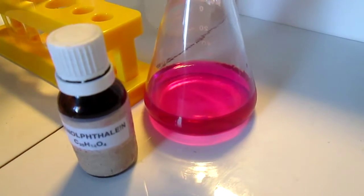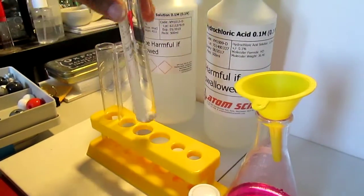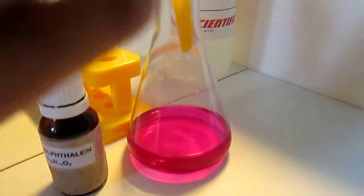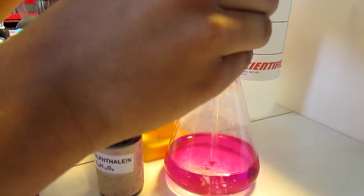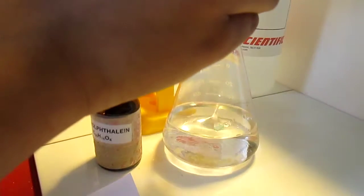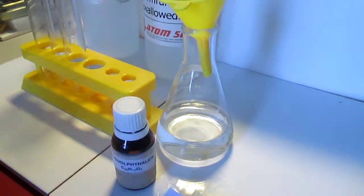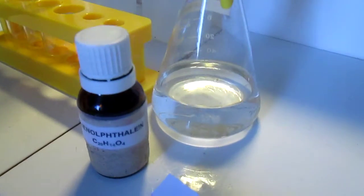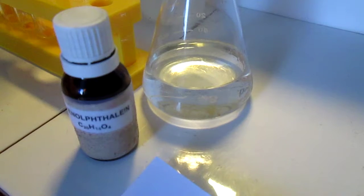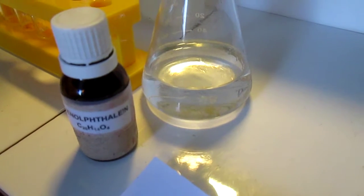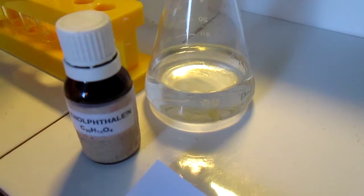Then we add hydrochloric acid into the flask. You can see the pink solution now becomes colorless again. This is because the solution is no longer alkaline due to the addition of the acid.